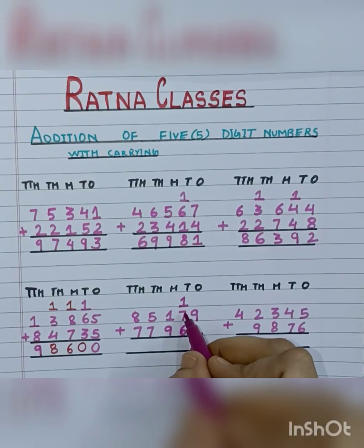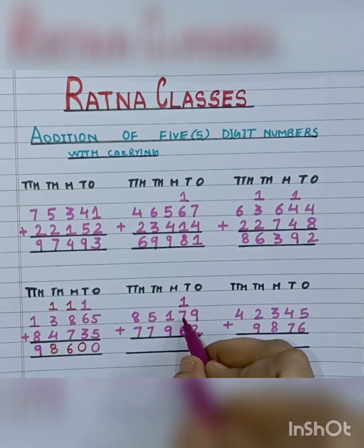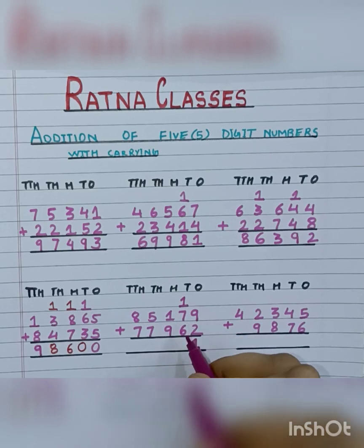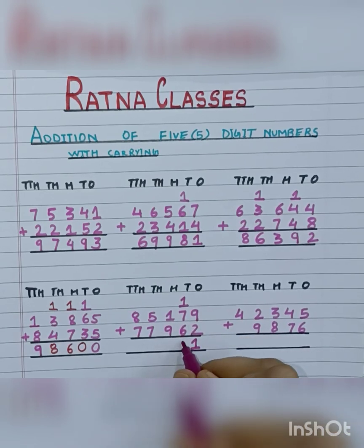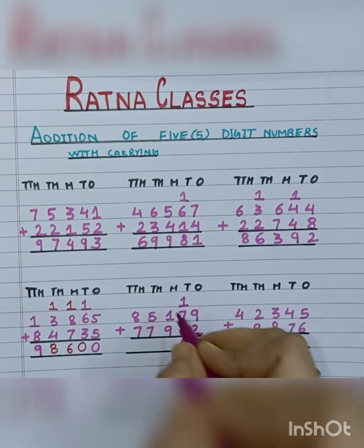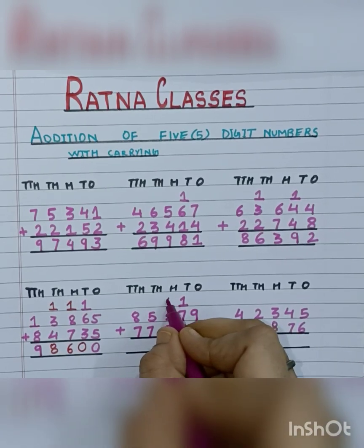Now we will add the tens place: 1 carry plus 7 is 8, and 8 plus 6 is 14. So we will write 4 here and take 1 carry.